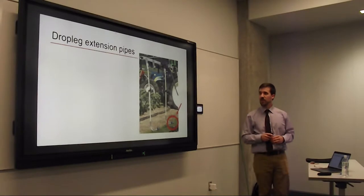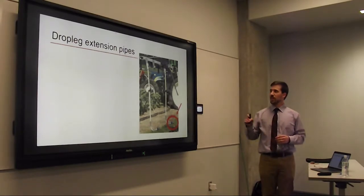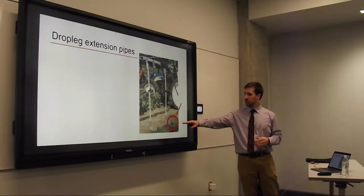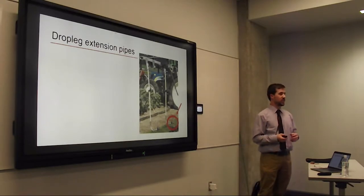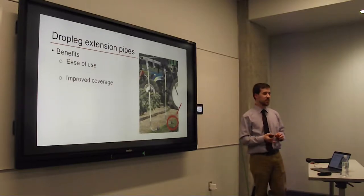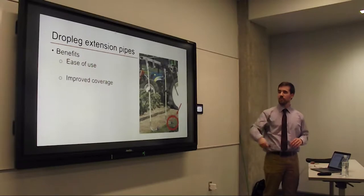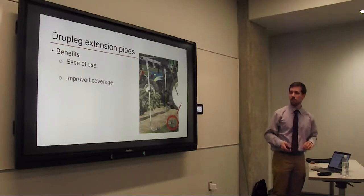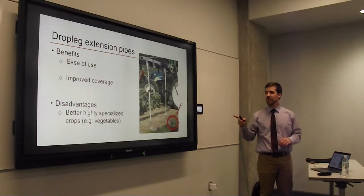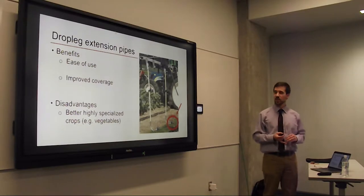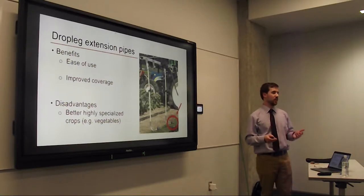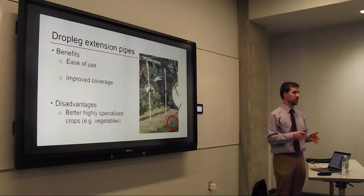Drop leg extensions attach to any current boom with a fish-hook design. On the end you have one or two nozzles that spray upwards to get those lower leaves and the underside of leaves. Benefits include ease of use and easy attachment to the boom, and you do see improved coverage especially on the underside of leaves. The disadvantage is that these are set on specific row spacings, which is better for vegetables — not soybeans, where you can have anywhere from 15 to 30 inch rows.